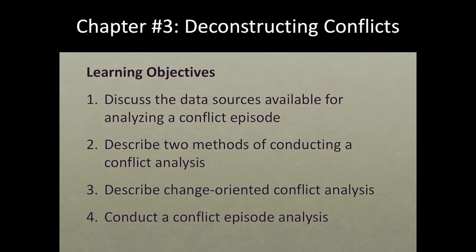Here's Chapter 3. We're going to plow through this on Deconstructing Conflicts, starting with something called an Issues Iceberg. Here's what we'll learn: first, how to discuss data sources available for analyzing conflict — how we take in information as conflict management practitioners and the pitfalls of self-reporting. Second, the two methods for conducting a conflict analysis. Third, describing change-oriented conflict analysis, where the goal is to helpfully create positive change for parties in conflict. And finally, we'll conduct a 50-point conflict episode analysis.